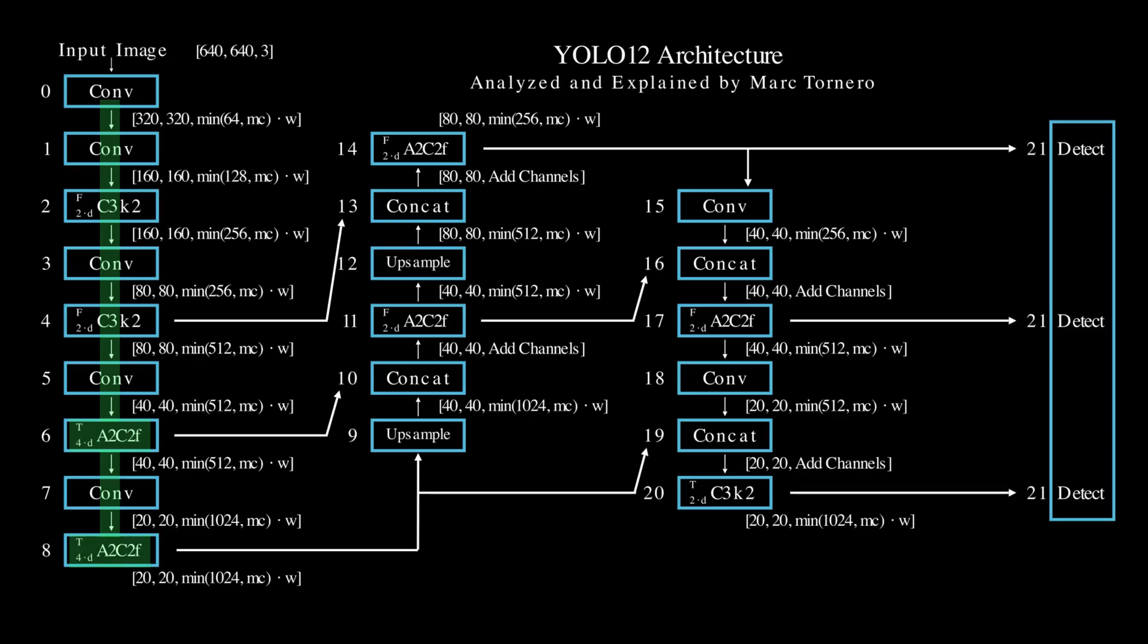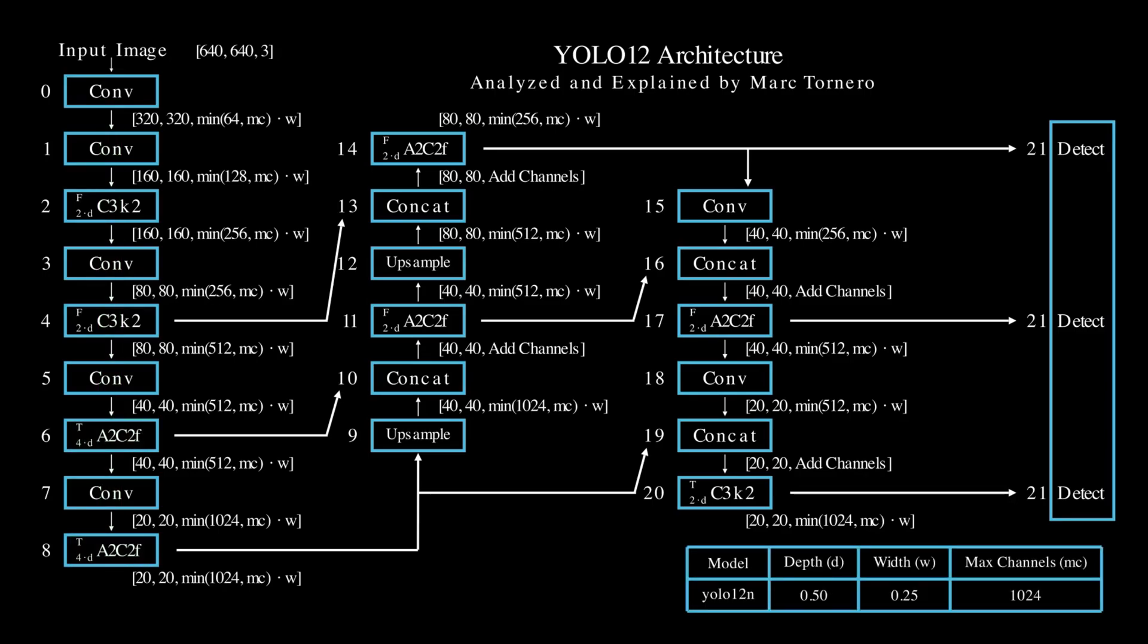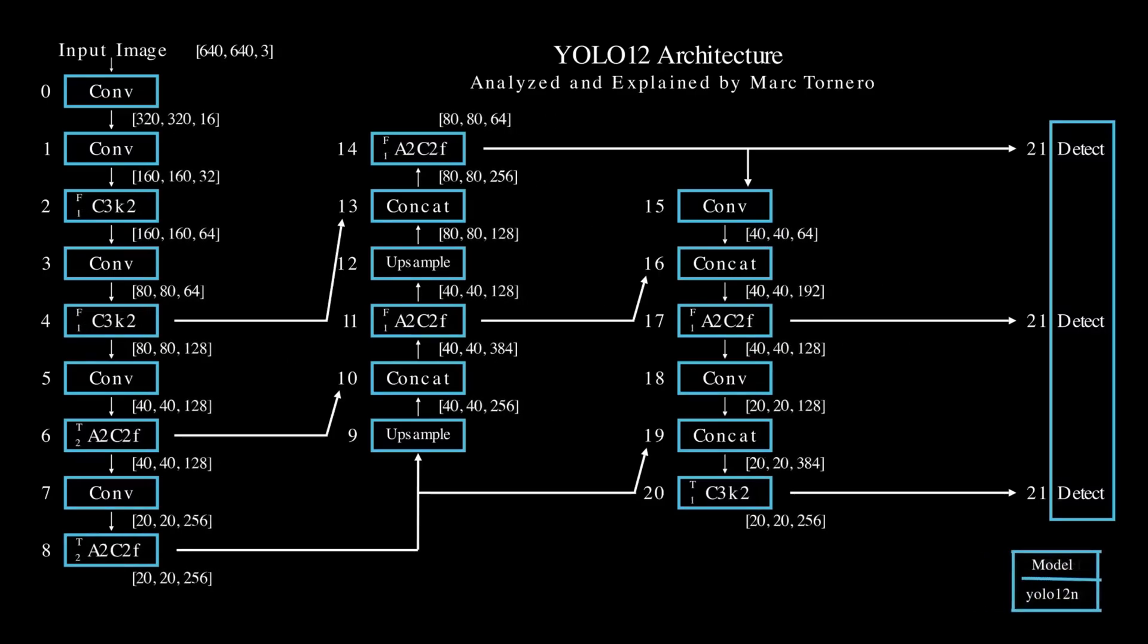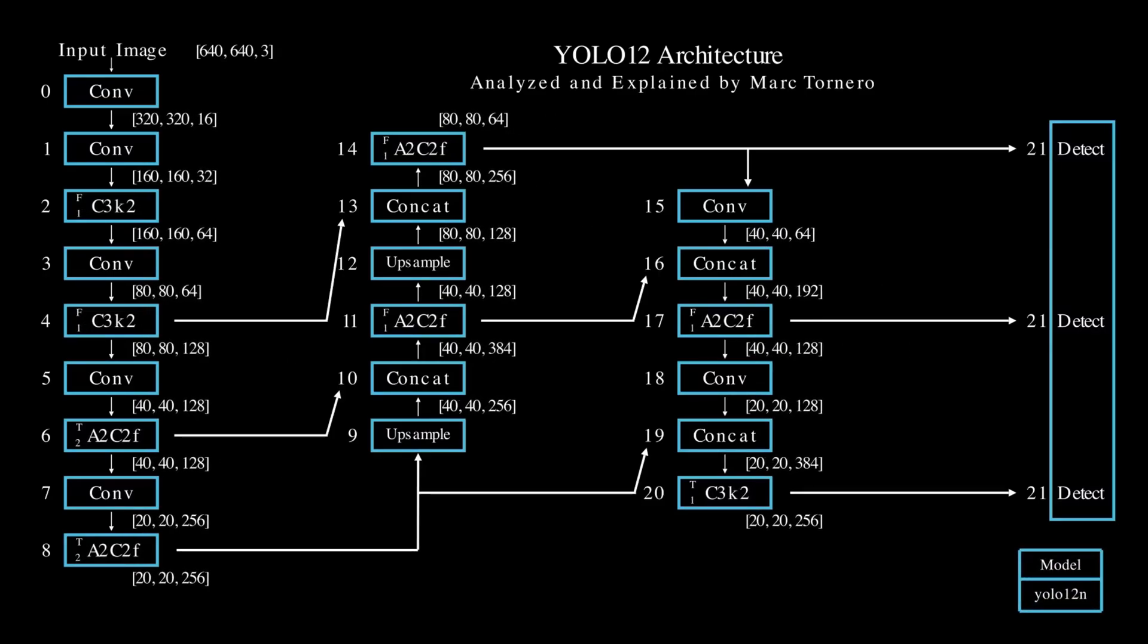In our case we're using the nano model size, so let's take a look at the respective values for the nano configuration. This model has a D or depth of 0.5, a W or width of 0.25, and an MC or maximum number of channels of 1024. By substituting these values into the architecture, we can derive the actual tensor shapes.